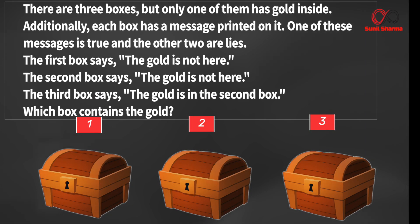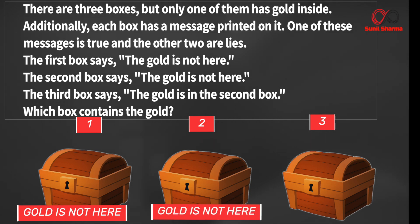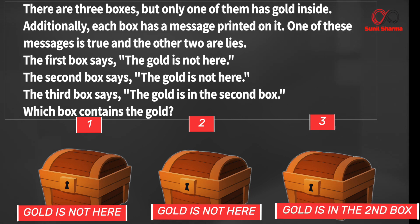There are three boxes but only one of them has gold inside. Additionally, each box has a message printed on it. One of these messages is true and the other two are lies. The first box says the gold is not here. The second box says the gold is not here. The third box says the gold is in the second box. Can you guess which box contains the gold?